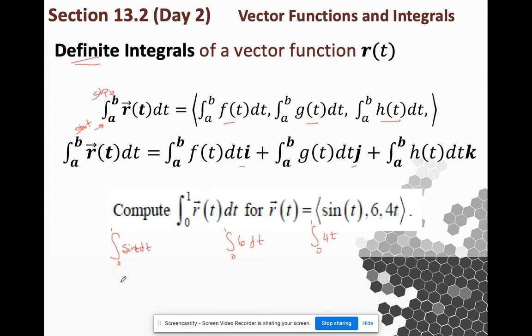Of course, I have to remember my anti-derivative rules. So I have negative cosine from 0 to 1, I have 6t from 0 to 1, and I have 2t squared from 0 to 1. This is negative cosine of 1 minus cosine of 0, which is 1 negated. Then I have 6 minus 0, and then I have 2 minus 0. So I can put this in component form: that's positive 1 minus cosine of 1, 6 and 2.